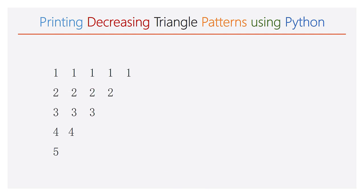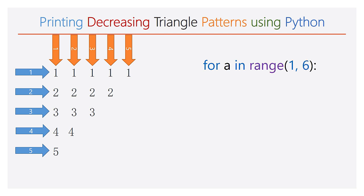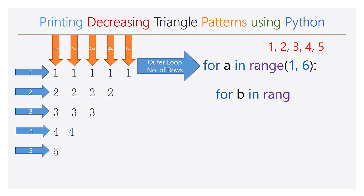Let us consider one more decreasing triangle pattern that contains numbers as shown. The number of rows and the number of columns are 5. The first line has the number 1 repeated 5 times. The second line has the number 2 repeated 4 times, and so on. In the fifth line, you have one number that is 5. For this we are using 2 for loops — an outer for loop with the range 1 to 6, which will iterate 5 times and decides the number of rows. The inner for loop has the range a to 6, and the inner for loop is made as a function of the outer for loop.